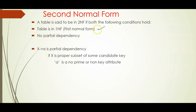So the input for the second normal form — the relation must be in the first normal form as per the rules, meaning every field in the relation must contain atomic values. Then the second condition in the second normal form is no partial dependency.